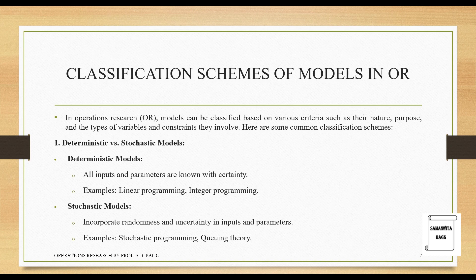The first classification is deterministic versus stochastic models. In deterministic models, all inputs and parameters are known with certainty. Examples are linear programming and integer programming problems. For instance, if you are producing a product made of various ingredients and want to calculate the profit, that would be a type of linear programming problem.